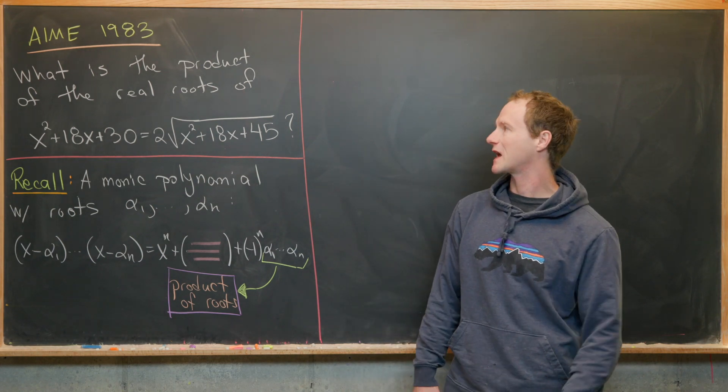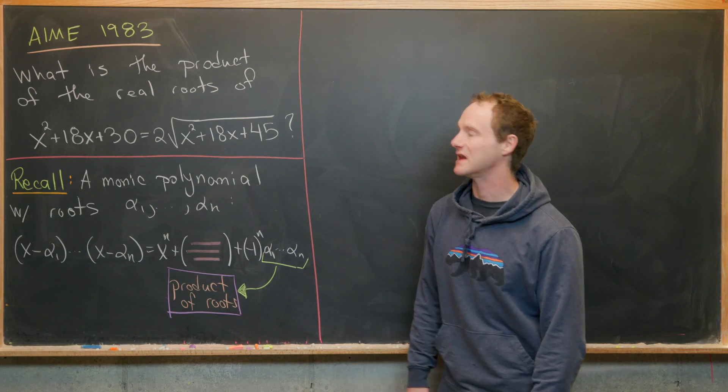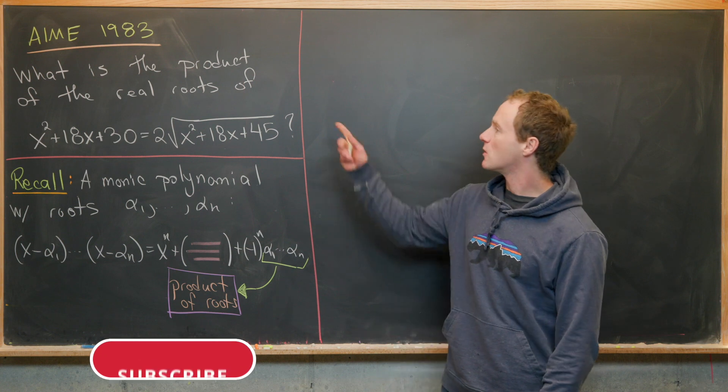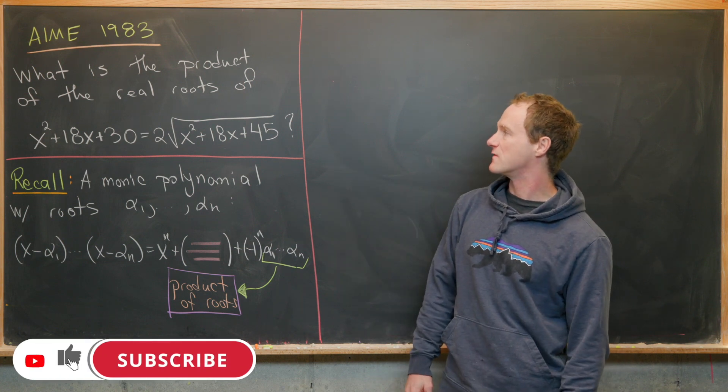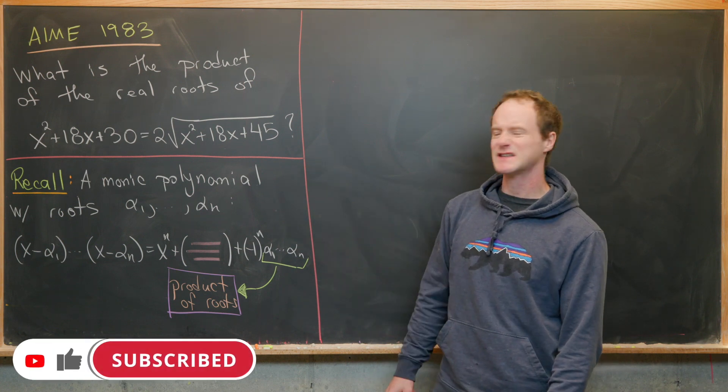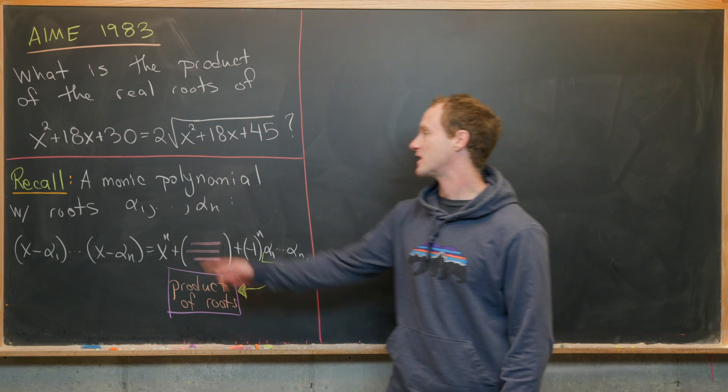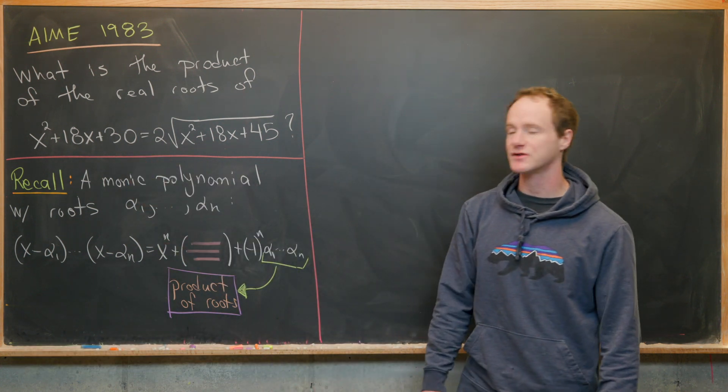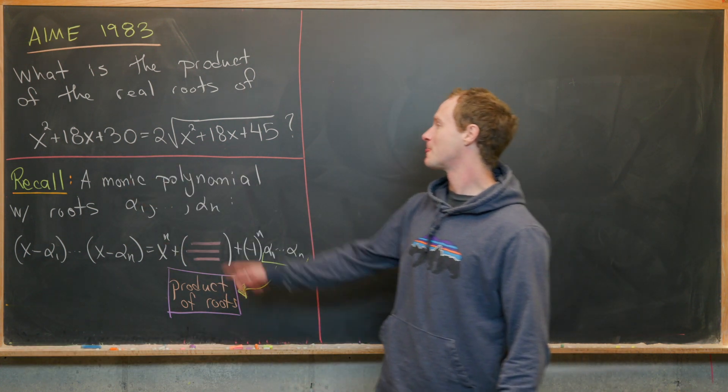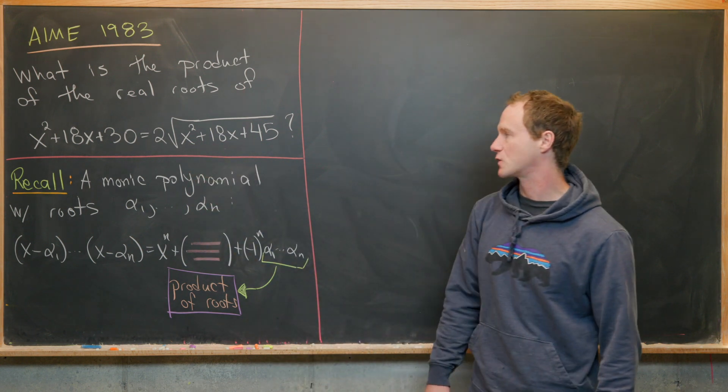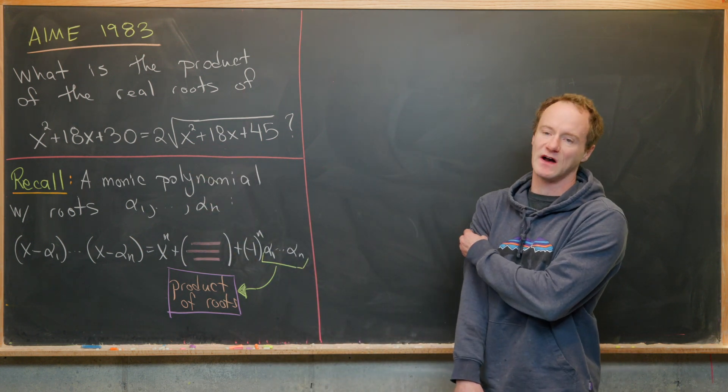Here we're going to look at a nice and fairly quick algebra problem from the 1983 AIME. We want to find the product of the real roots of this radical equation: x² + 18x + 30 = 2√(x² + 18x + 45).